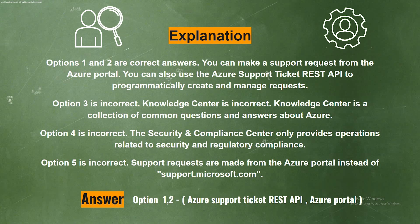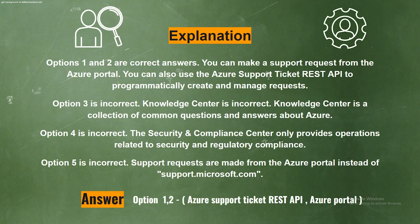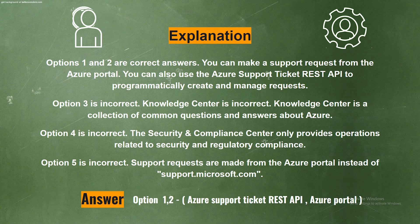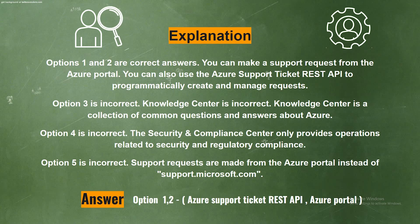Explanation. Options 1 and 2 are correct. You can make a support request from the Azure Portal. You can also use the Azure Support Ticket REST API to programmatically create and manage requests. Option 3 is incorrect — Knowledge Center is a collection of common questions and answers about Azure. Option 4 is incorrect — the Security and Compliance Center only provides operations related to security and regulatory compliance. Option 5 is incorrect — support requests are made from the Azure Portal instead of support.microsoft.com.